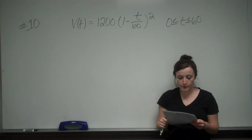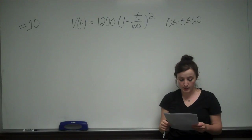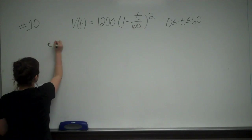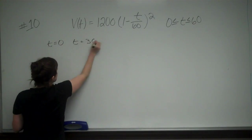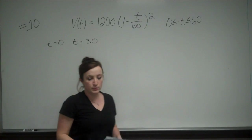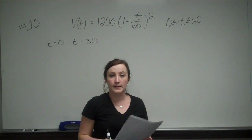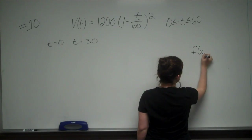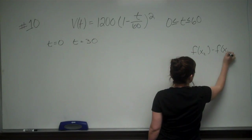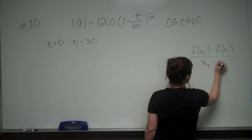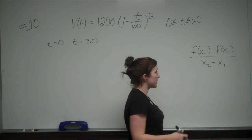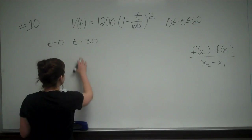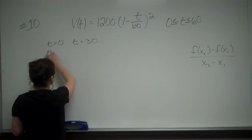They want us to first find the average rate of change of volume in the first 30 minutes, from T equals 0 to T equals 30. The average rate of change is the formula: F(x₂) minus F(x₁) all over x₂ minus x₁, or Y₂ minus Y₁ over X₂ minus X₁. So T=30 is our x₂ and T=0 is our x₁.